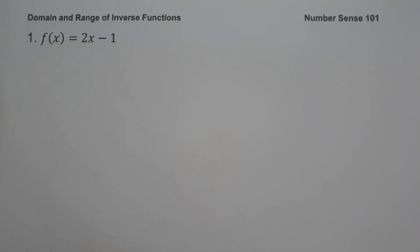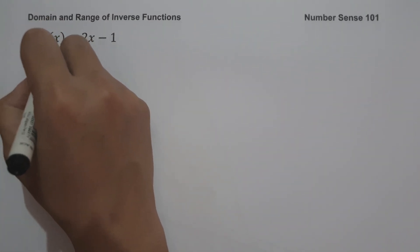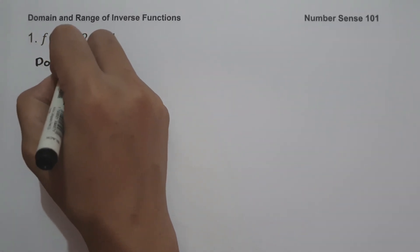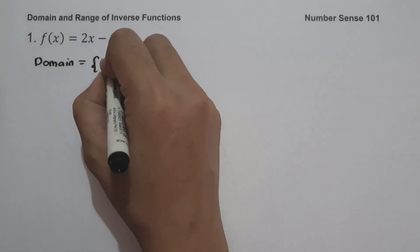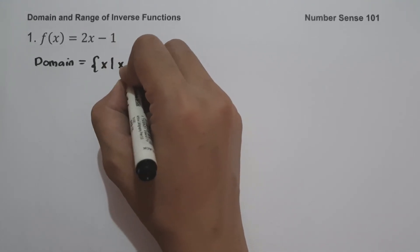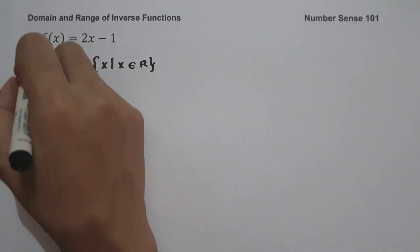The given example is a linear function written in slope-intercept form. Always remember, the domain and range of a linear function written in slope-intercept form is always all real numbers. So the domain is the set of x values such that x is the set of all real numbers.